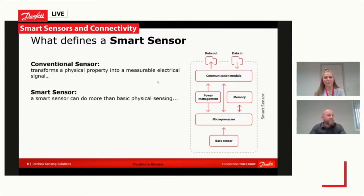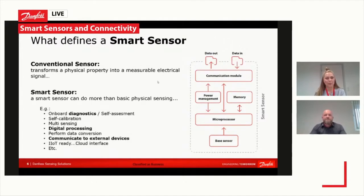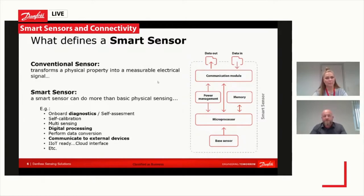Depending on the protocol, this could also be data-out only. Some examples of new features include: on the diagnostic side, information about what the sensor has experienced over its lifetime — self-assessment logic that can be very beneficial when problems occur on the application side. There are also self-calibration features, such as application-specific or installation-point-specific algorithms that trigger certain calibration steps. Multi-sensing is another interesting capability, where a single sensor can detect more than one physical property — combined pressure, temperature, humidity, or gas sensing, for example.